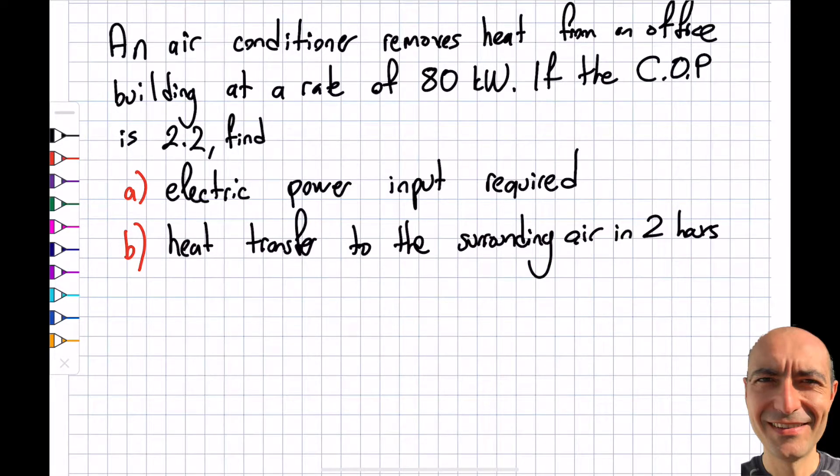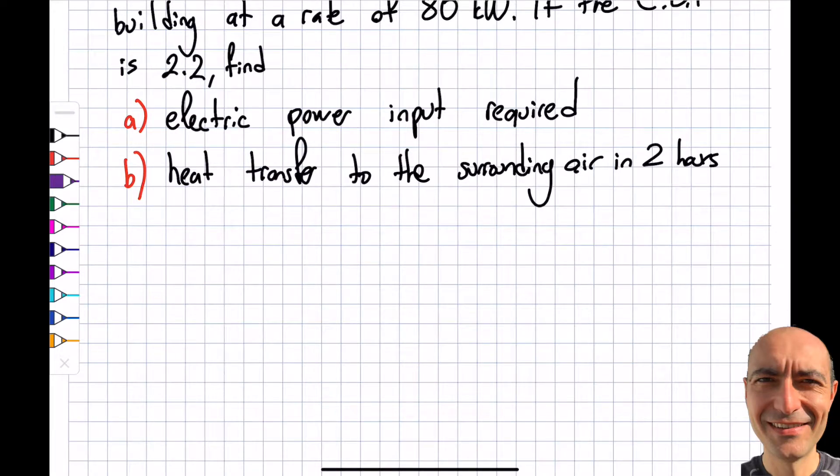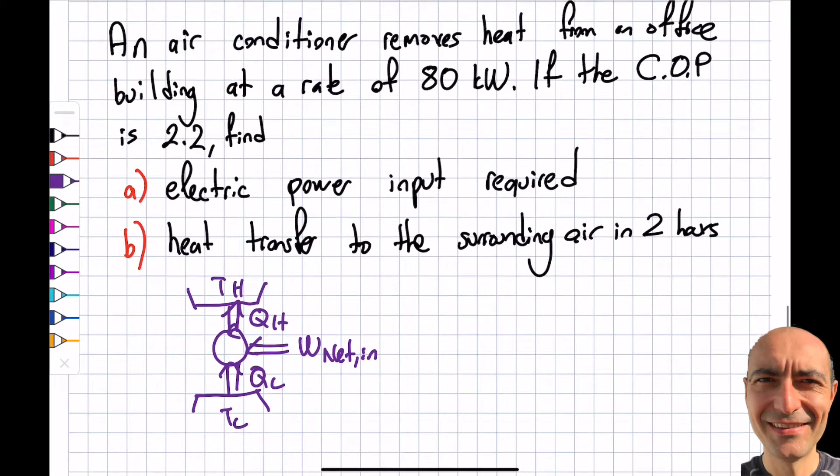If the coefficient of performance is 2.2, find the electric power input required and the heat transfer to the surrounding air in two hours. Before I start, I want to revisit the cycle that I have. I have Q_L, Q_H, and W_net_in here.